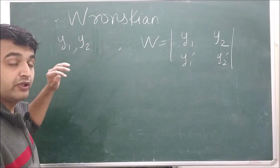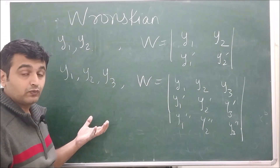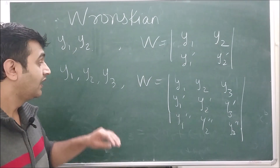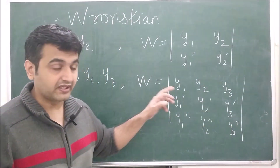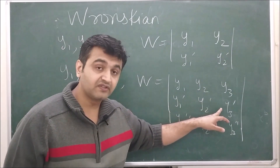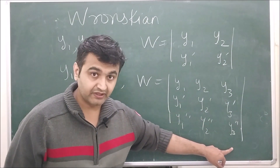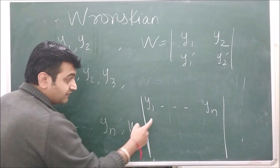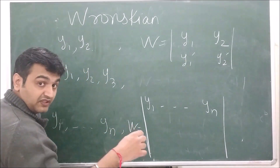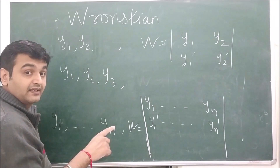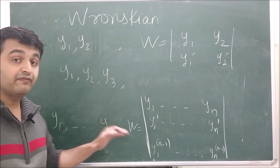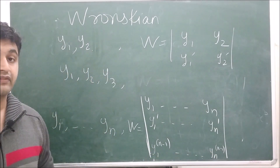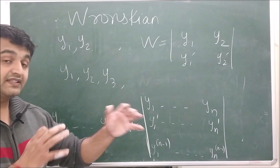For three functions y1, y2, y3 that are twice differentiable, the Wronskian is the determinant of a 3×3 matrix: first row is the functions, second row is the first derivatives, third row is the second derivatives. More generally, for n functions (n−1 times differentiable), the Wronskian is an n×n determinant where the last row contains the (n−1)th derivatives.